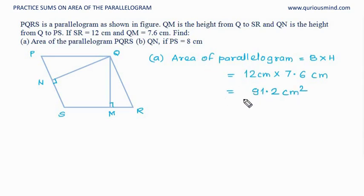Now we have found area, and now we want to find QN if PS is given. So again, if you see, PS is a base and QN is an altitude or height.